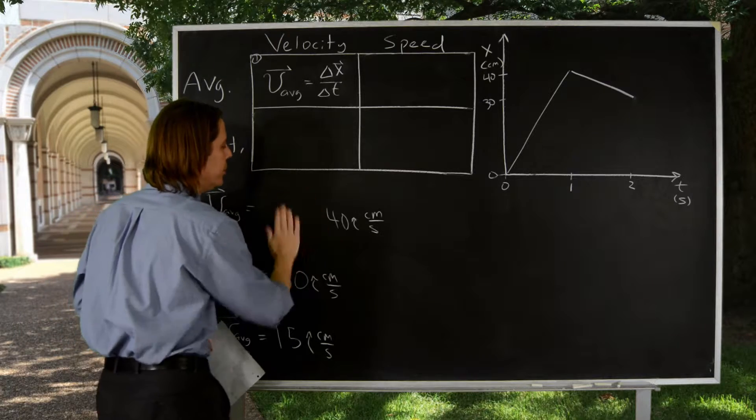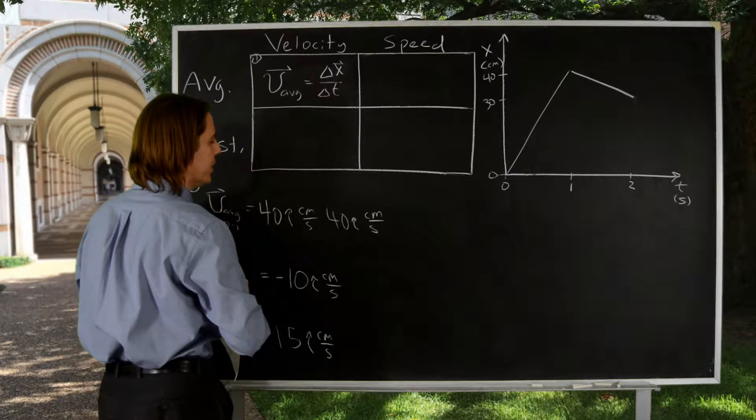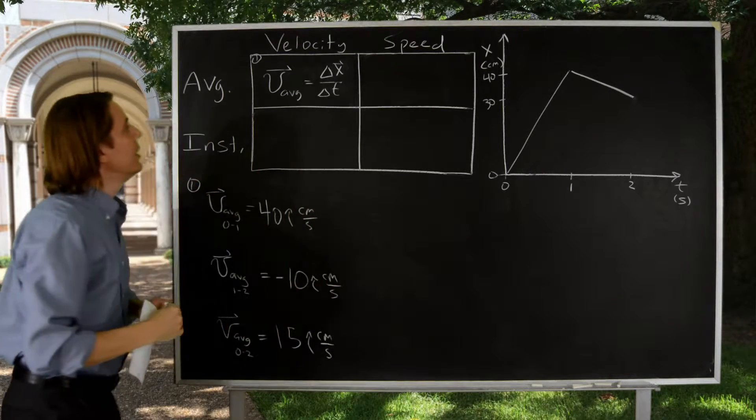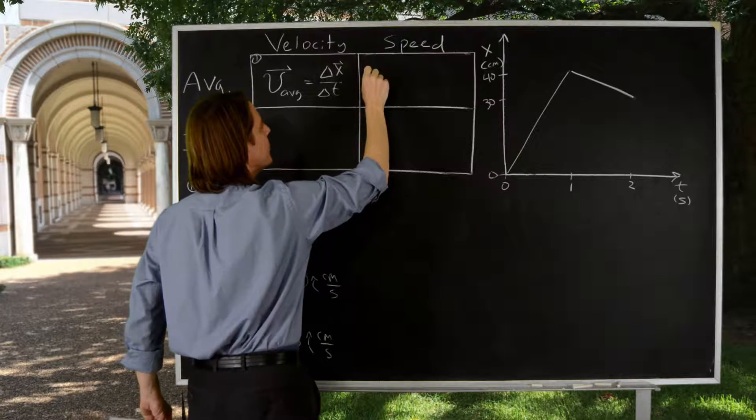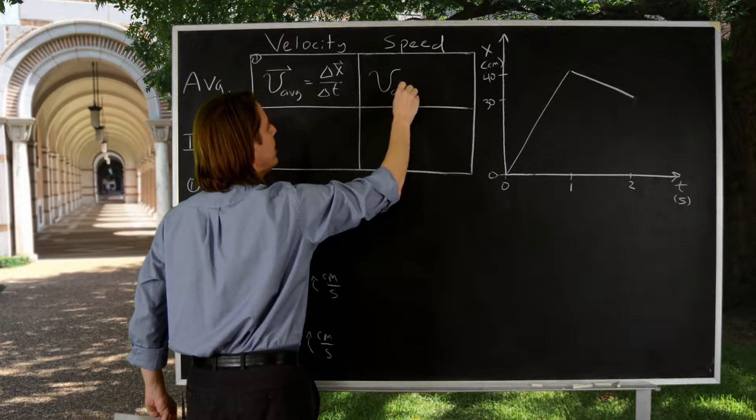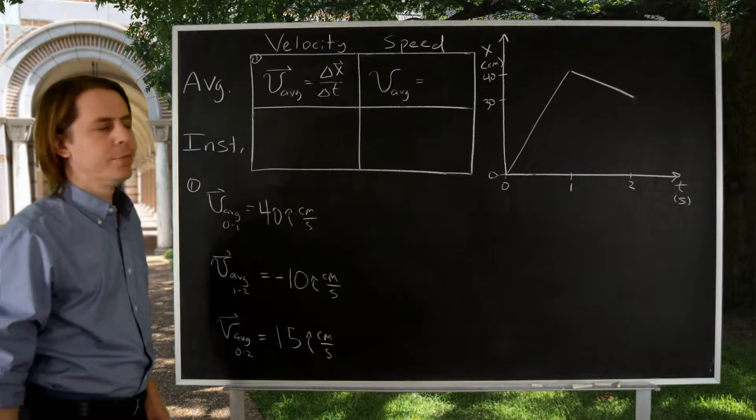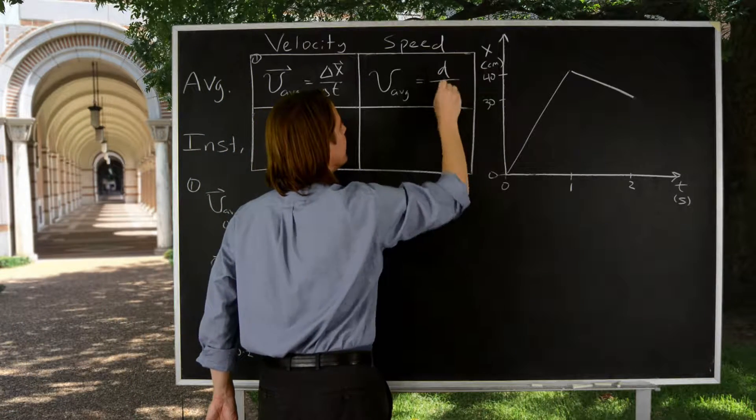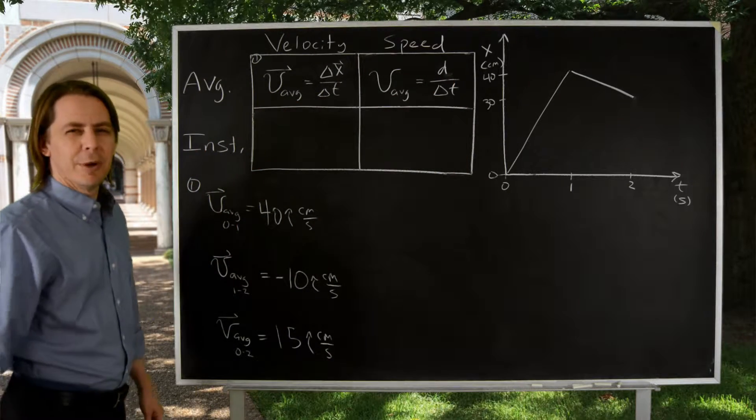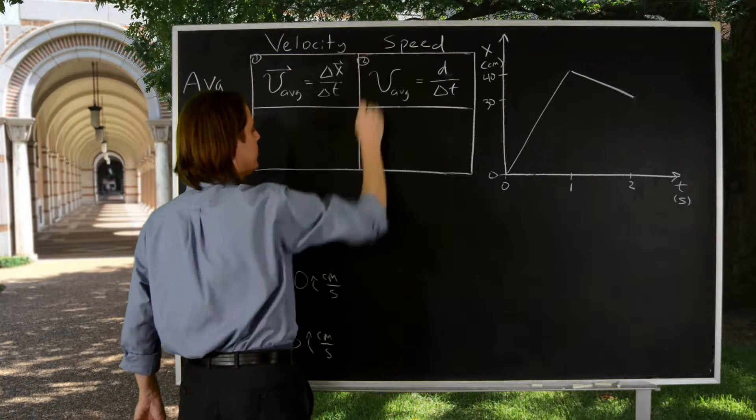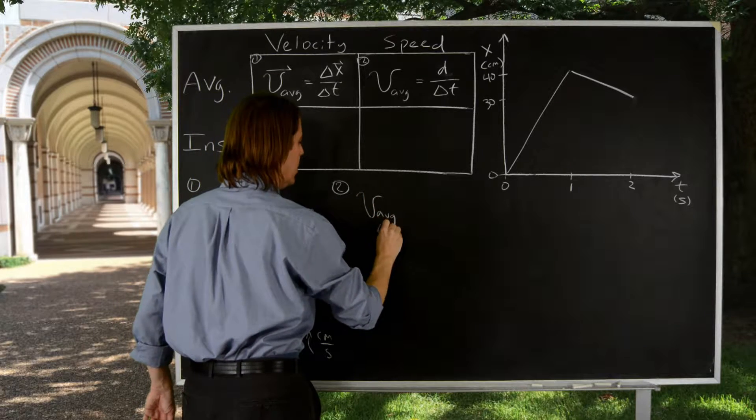I'm going to buy us a little room on the board here. So the next one is the average speed. A big difference is velocities are vectors, and speeds are not vectors. So we're going to indicate speed with a cursive V with AVG, but we're not going to put a vector symbol over it. So the speed is the distance traveled over delta T.